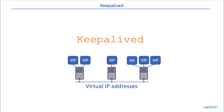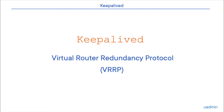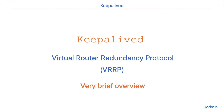Before we concentrate on Keepalived, we need to talk a bit about the underlying protocol which is used to establish this high availability. This protocol is VRRP, or Virtual Router Redundancy Protocol. In a networked environment, VRRP increases the availability and reachability of network routing paths, but you can also use it in Linux server environments. Since this is a short and high-level video, we will cover VRRP in just four sentences, and then we'll see how Keepalived uses this protocol for its own purposes.